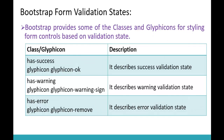Bootstrap provides us some classes and glyphicons for styling the form controls based on the validation state. The first pair is the has-success class and the glyphicon glyphicon-ok. It describes the success validation state — has-success is a class and glyphicon-ok is a glyphicon.